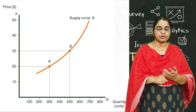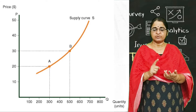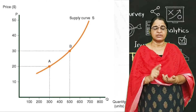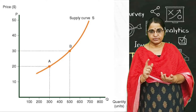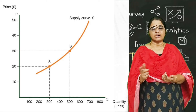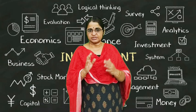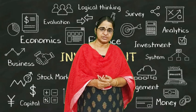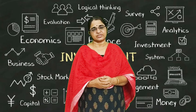We have the individual supply curve of seller A, individual supply curve of seller B, and individual supply curve of seller C. The graph of the market supply schedule gives us the market supply curve.